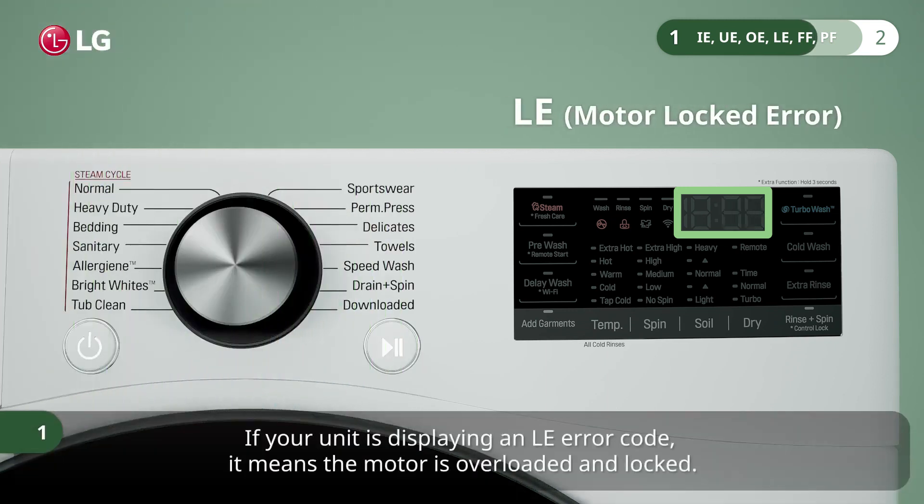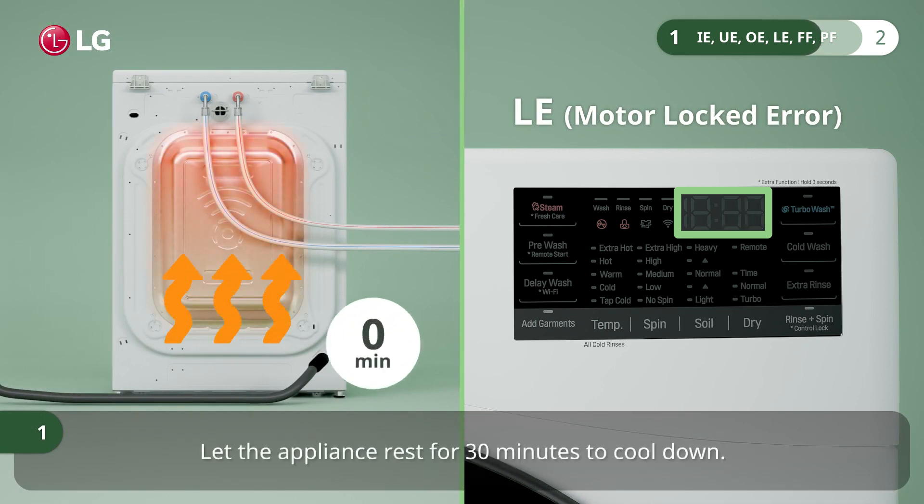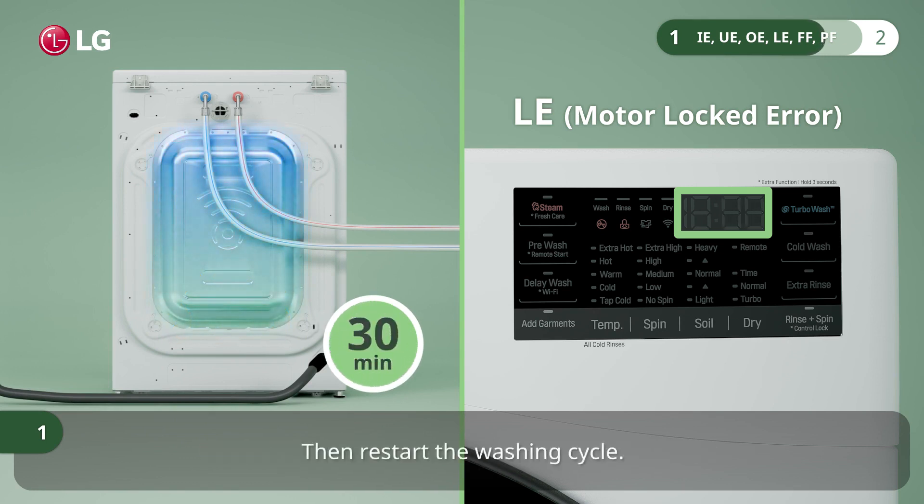If your unit is displaying an LE error code, it means the motor is overloaded and locked. Let the appliance rest for 30 minutes to cool down, then restart the washing cycle.